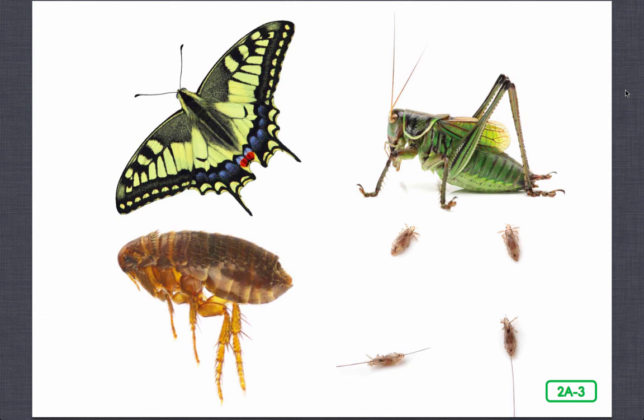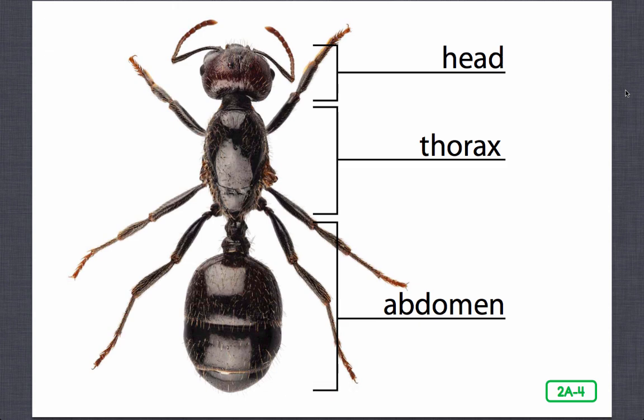I am here to talk about what makes an insect an insect. Our name should give you a clue: in-sect. An insect's body is built in sections or parts — three parts to be exact. We will use one of my friends, the ant, as an example. All insects have a head, a thorax, and an abdomen.